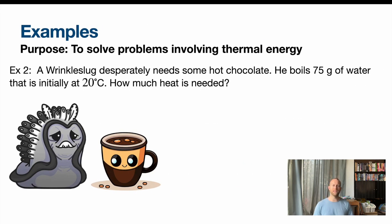So we've got a Wrinkle Slug. He's desperately needing some hot chocolate. I don't know why. It just is. So he boils 75 grams of water that's initially at 20 degrees Celsius. How much heat is needed? We have our equation. Q equals MC delta T. And we have numbers for each of these. M. That's the mass of the water. Convert it into kg.